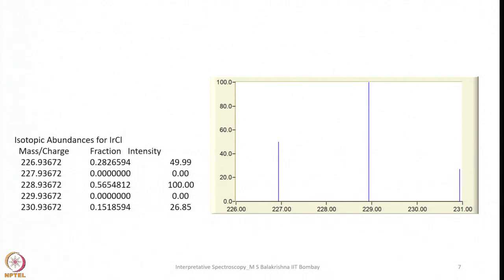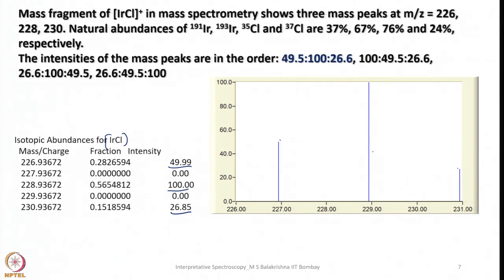I had simulated the spectrum for this problem. We can see 3 peaks at around 230, 228, and 226. If you compare the abundance with respect to the mass, these three are in a certain ratio — this is the information one can get directly from the mass spectrum of IrCl. But how to calculate this? Let us see whether we can arrive at this ratio using calculations.